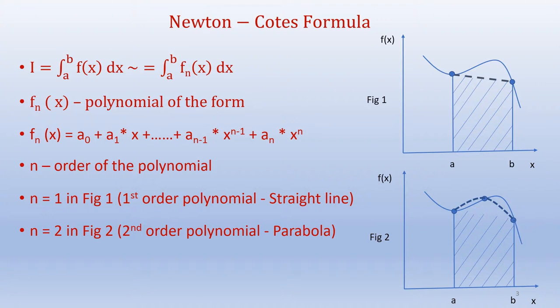The general Newton-Cotes formula is given as I equals integral a to b f(x) dx, where f(x) is the function we would like to integrate. This is approximated by integral a to b f_n(x) dx, where f_n(x) is the polynomial of the form a_0 plus a_1 times x plus a_2 times x squared plus up to a_{n-1} times x^{n-1} plus a_n times x^n.